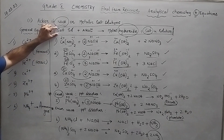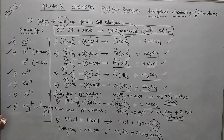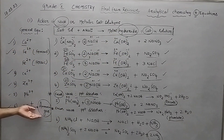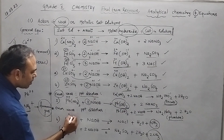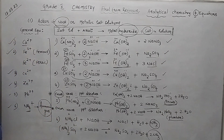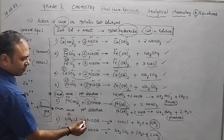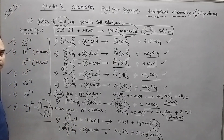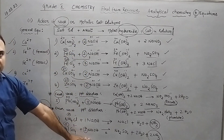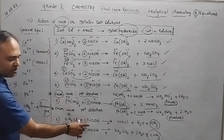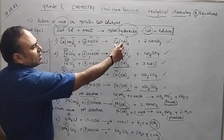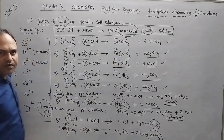Now the last equation: if the salt contains ammonium ion, the product deviates — instead of a hydroxide precipitate, you get ammonia gas. Take ammonium chloride or ammonium sulfate. NH₄⁺ is +1, so coefficient is 1; if it's 2+ the coefficient is 2. The rule is consistent: +1 → 1 NaOH, +2 → 2 NaOH, +3 → 3 NaOH.